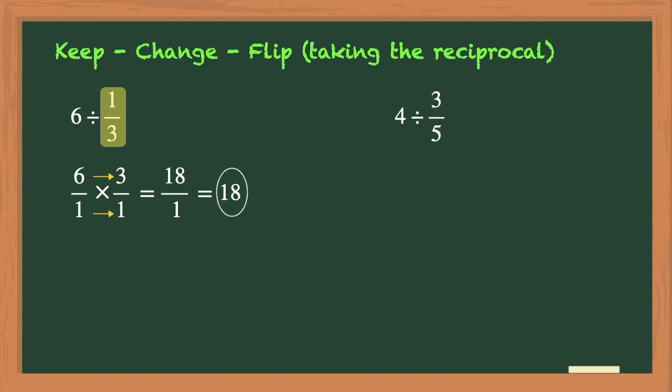Let's look at this next problem here. It also has a whole number being divided by a fraction. So again, you will need to rewrite the whole number of 4 as an equivalent fraction by moving the 4 into the numerator and placing a 1 in the denominator. Then you will keep the first fraction of 4 over 1, change the division sign into a multiplication sign, and then flip that second fraction of 3/5 to 5 over 3.